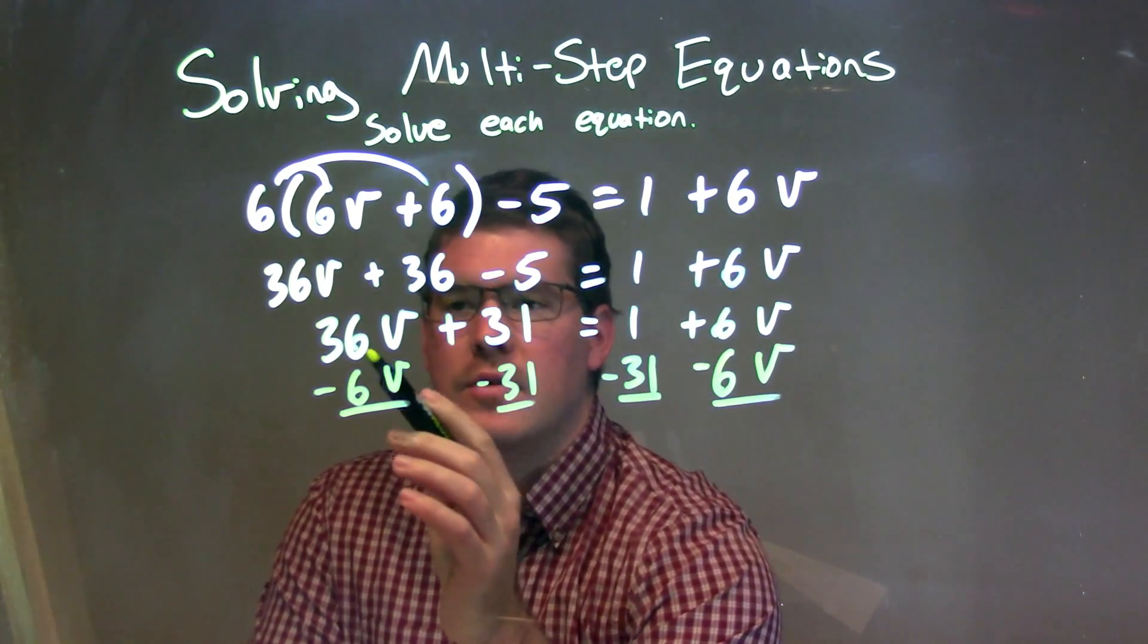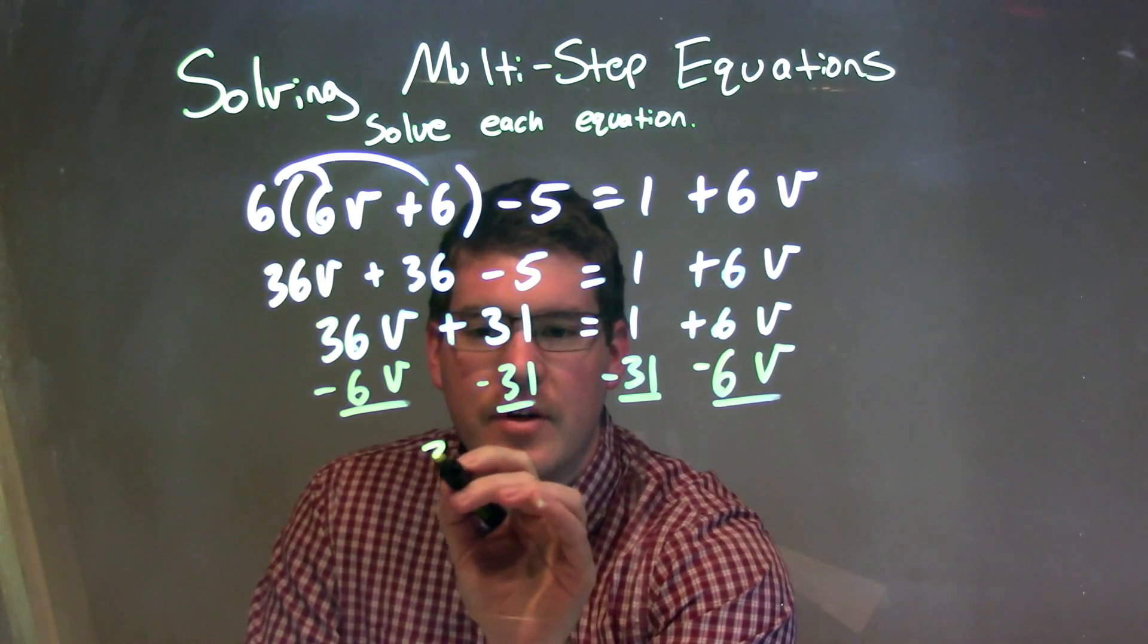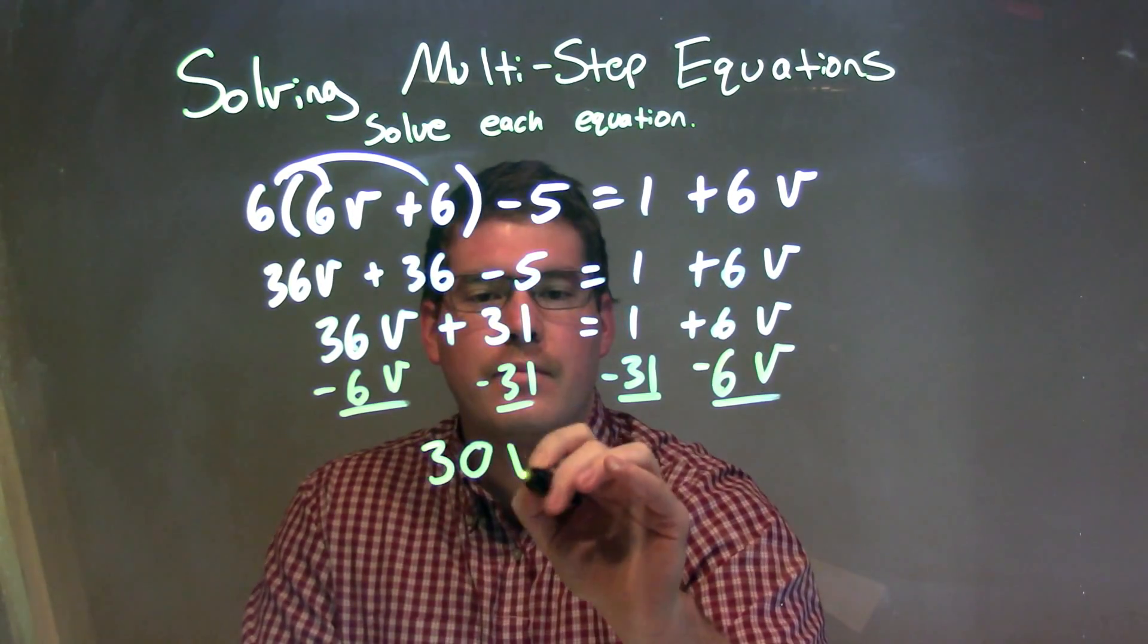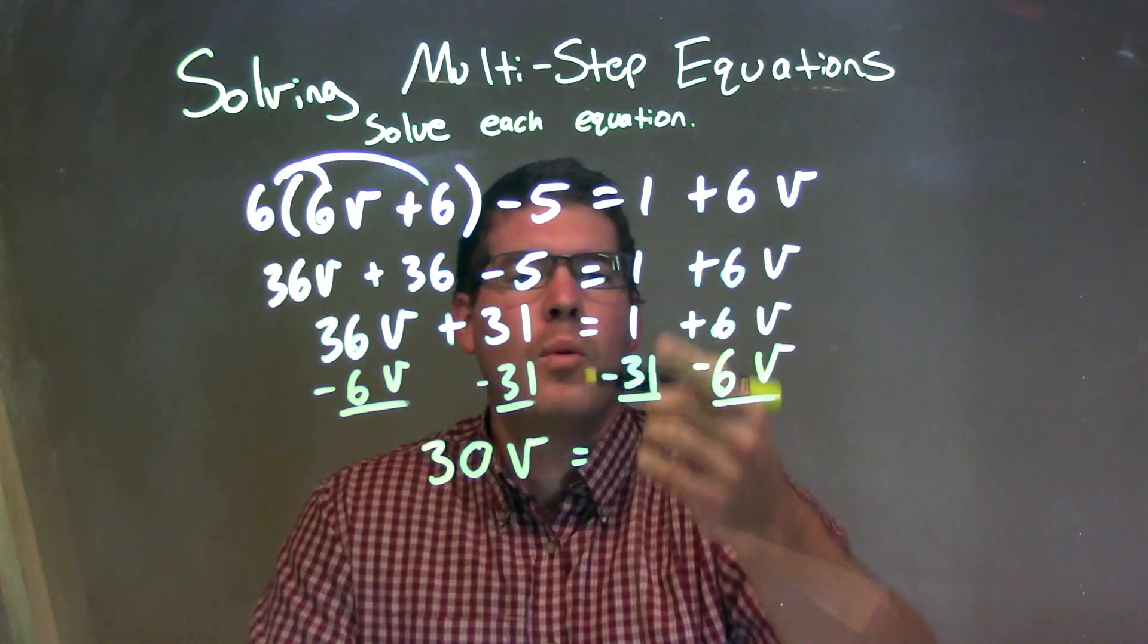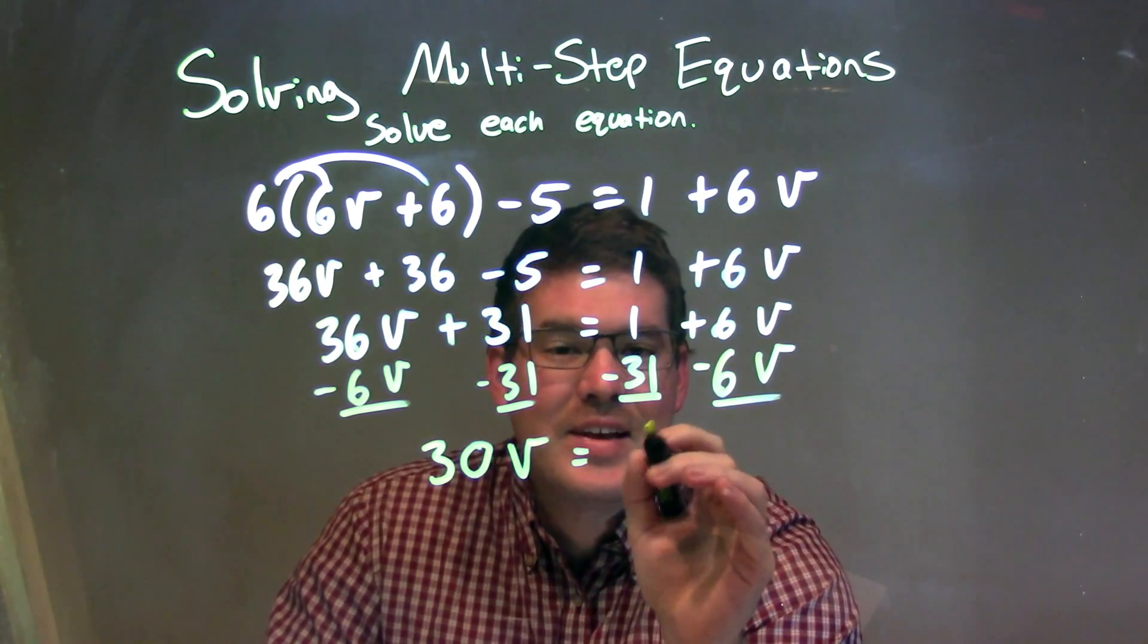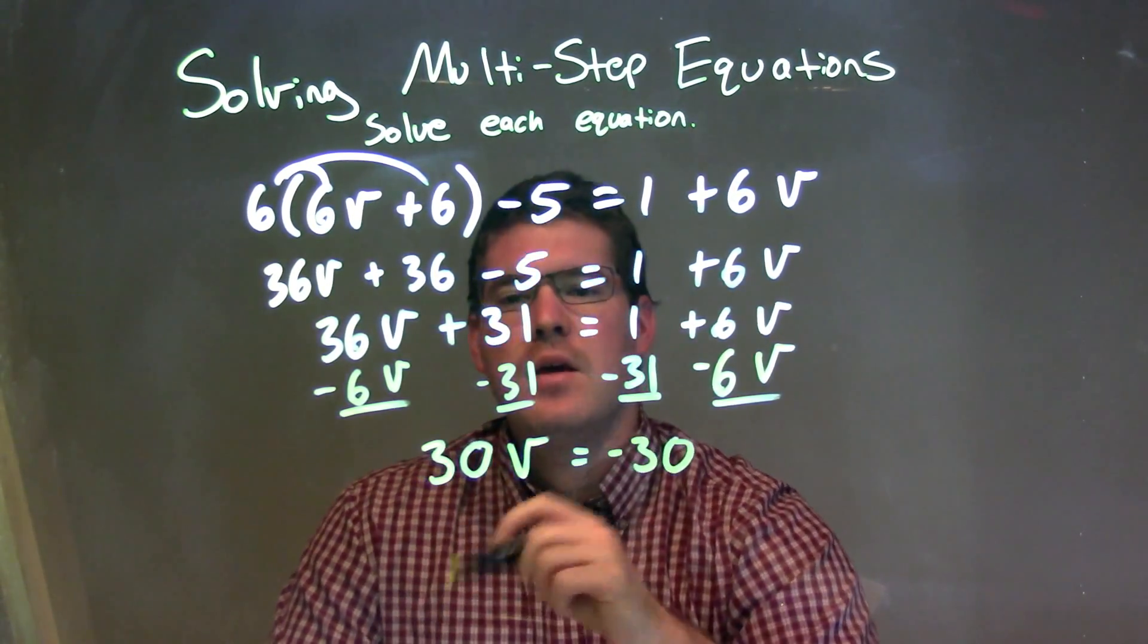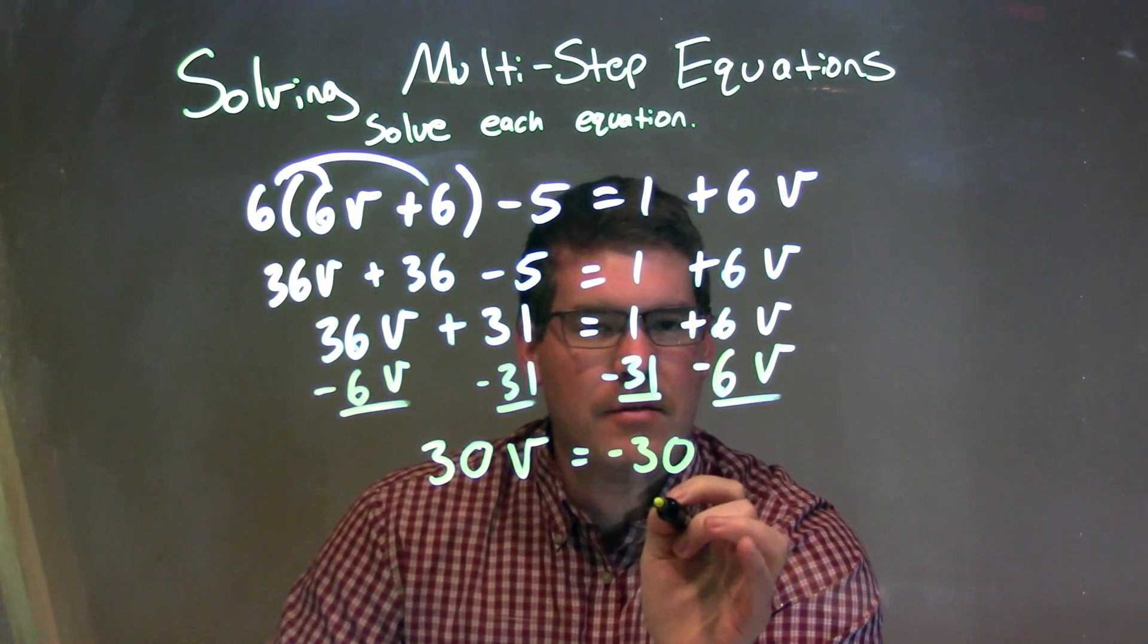What that allows me to do is have, 36V minus 6V is just 30V equals 1 minus 31 is a negative 30. So, now we have 30V equals a negative 30.